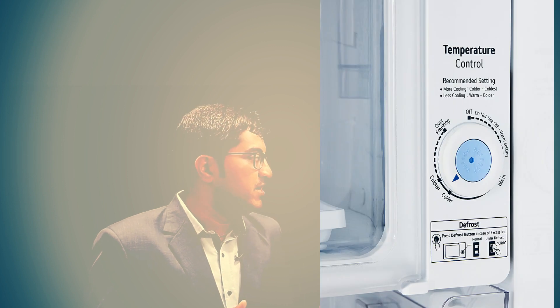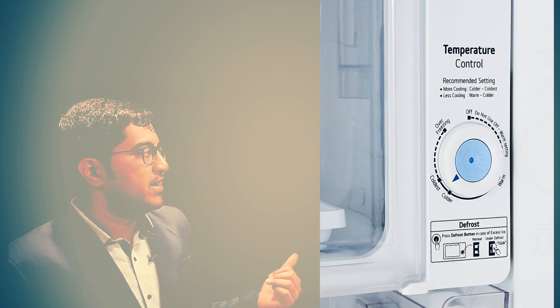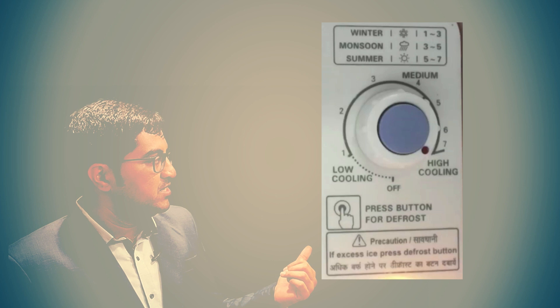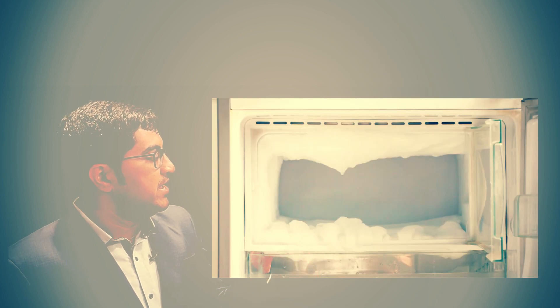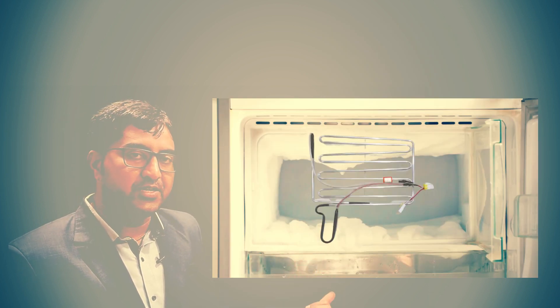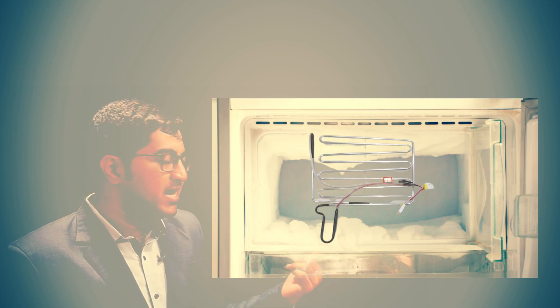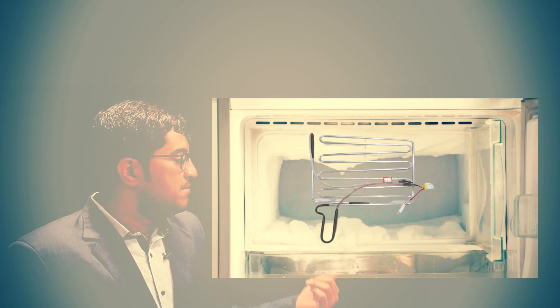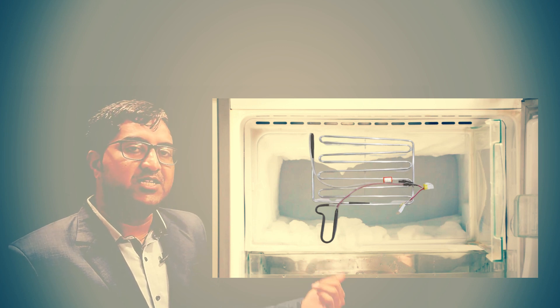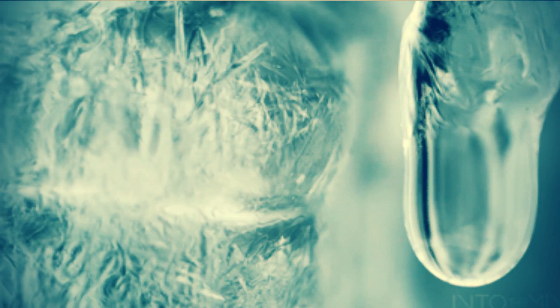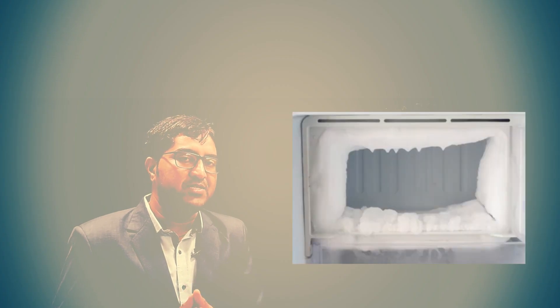The other method is the automatic method. In the refrigerator, one defrost button is provided. Whenever you press it, it heats the evaporator or freezer. Due to the heating of the heater coil inside the evaporator, it melts all the ice formed inside the freezer. So basically there are two types of defrosting methods: manual and automatic.